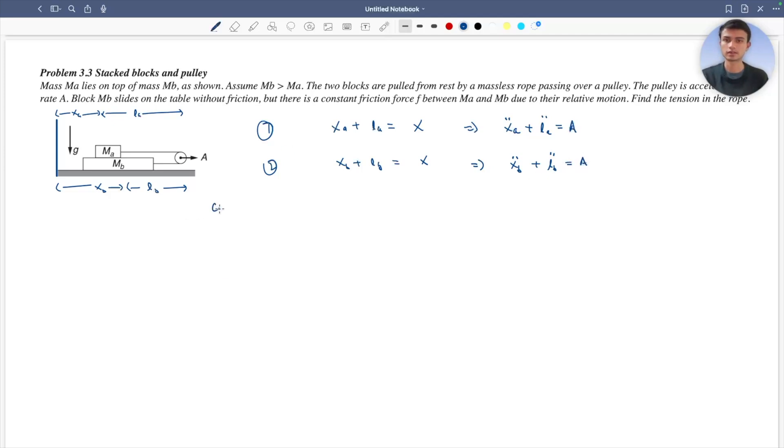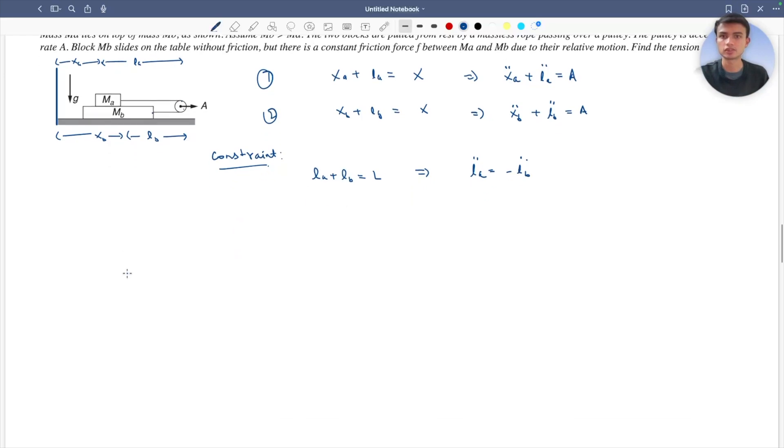There is an equation of constraint which says that la plus lb equals to L, which is constant. This implies that la double dot equals to minus lb double dot.